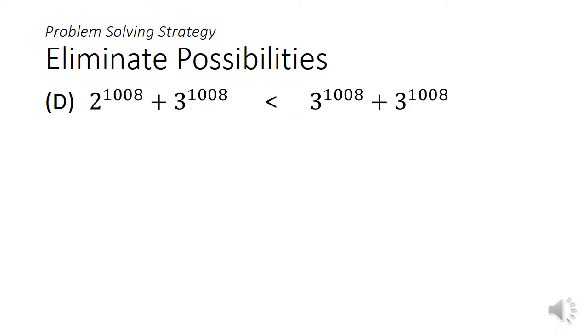We are going to approach this problem by eliminating possibilities. Let's examine option D. 2 to the power of 1008 plus 3 to the power of 1008 is less than 3 to the power of 1008 plus 3 to the power of 1008. And if I add one more 3 to the power of 1008 to this expression, I'll get 3 times 3 to the power of 1008, and that would be 3 to the power of 1009, which is less than 3 to the power of 2016, which is option B, hence eliminating option D.